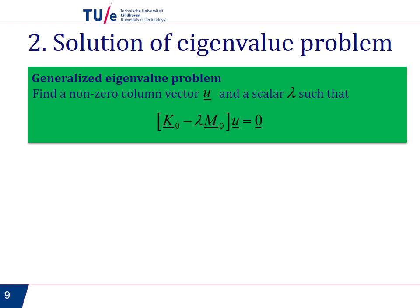The generalized eigenvalue problem consists in finding a column vector u and a scalar λ such that the expression you see on the screen is fulfilled.